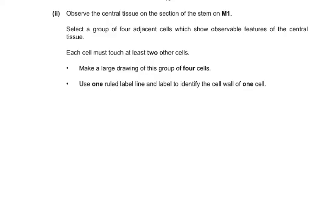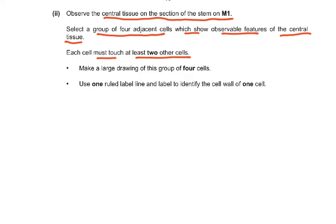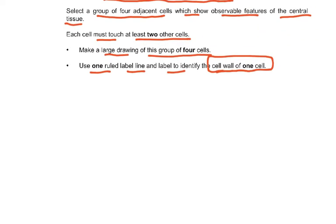Part two of the question is another five-mark question. Observe the central tissue on the section of the stem on M1. Select a group of four adjacent cells which show observable features of the central tissue — each cell must touch at least two other cells. Make a large drawing of this group of four cells. Use one ruled label line and label to identify the cell wall of one cell. The important thing to remember is you only have to draw four cells, nothing more than that.